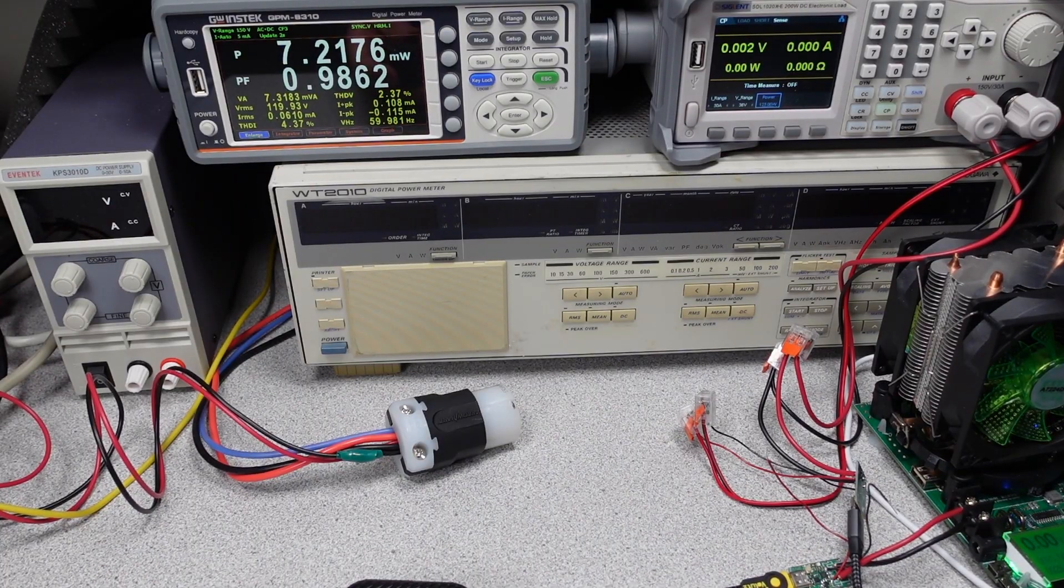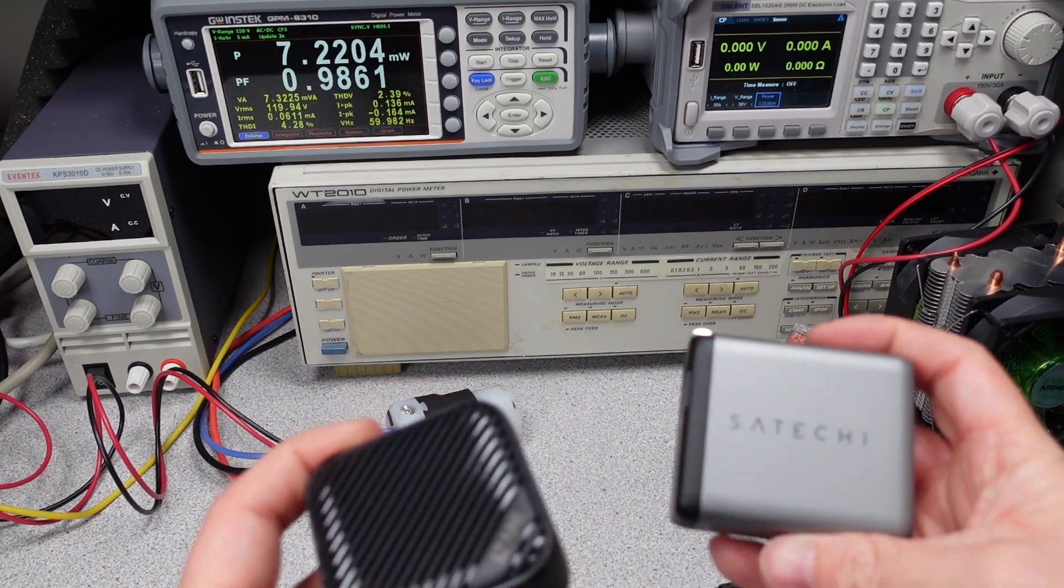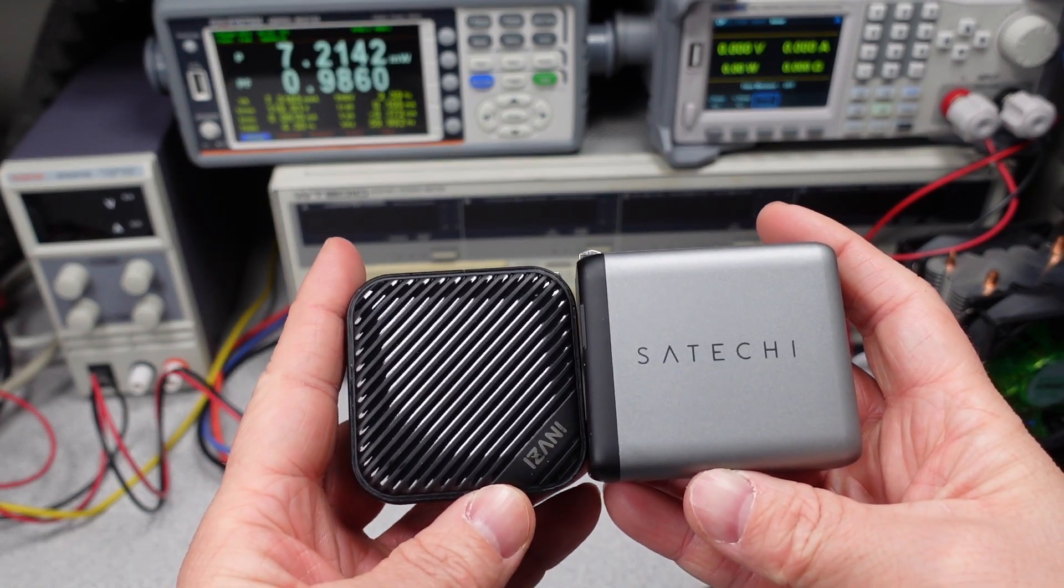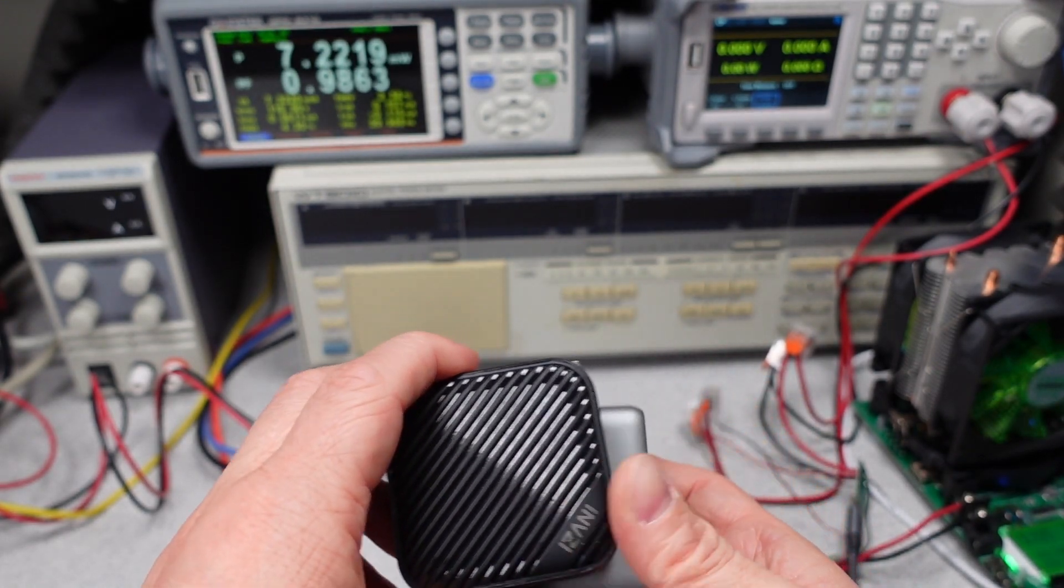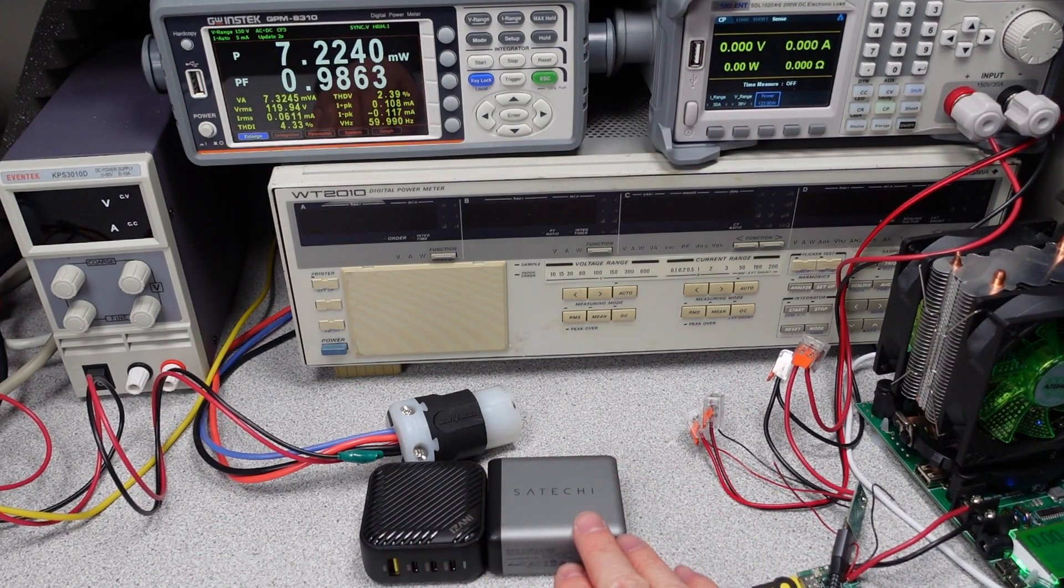So I got a few different adapters for a size comparison. First I have the Satoshi 100 Watt adapter. You can see it's a little bit smaller, not a ton smaller, but it is a little bit smaller. Height-wise, they're about the same.